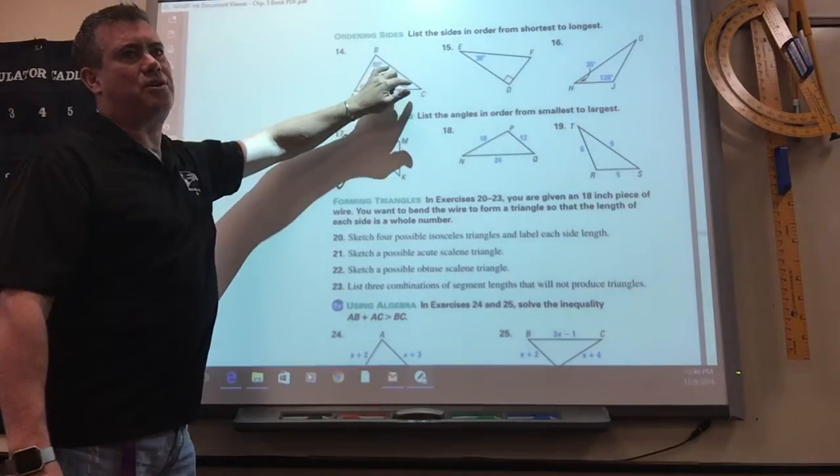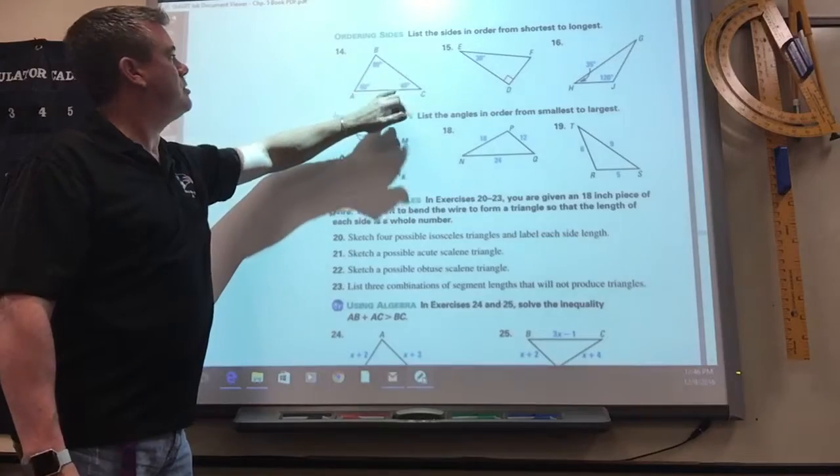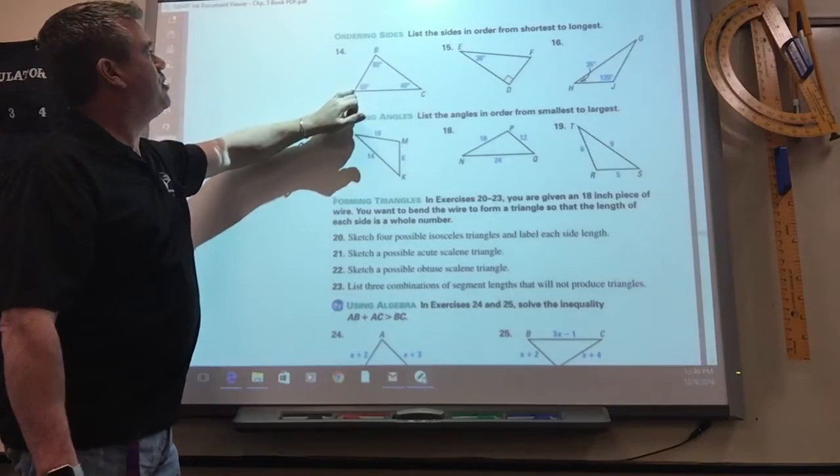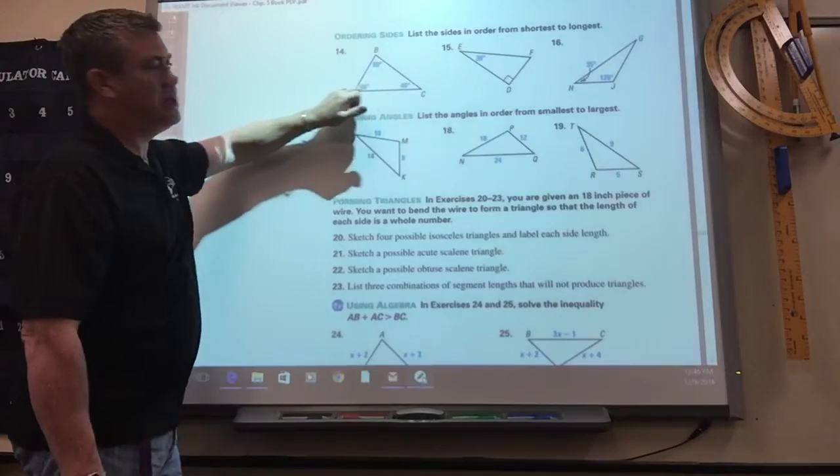Here you're just listing the sides in order like we did in the examples. AB first, BC second, AC third.